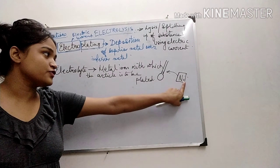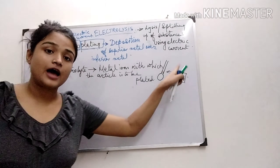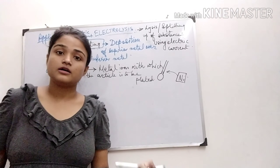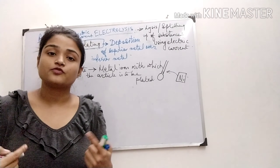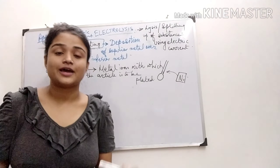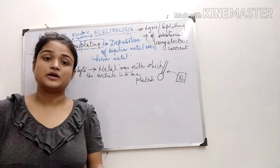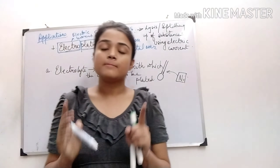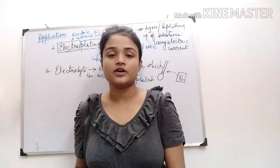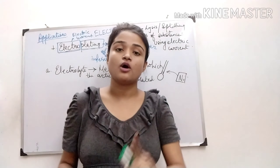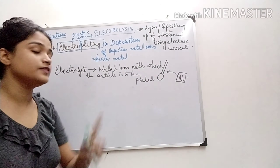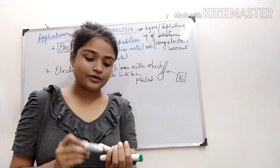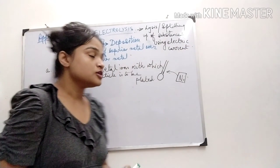So if I want to plate this with silver, I have to take a silver electrolyte. If I want to plate this with copper, the electrolyte must be copper sulfate. The metal ion must be present in the electrolyte — that is the electrolyte selection.